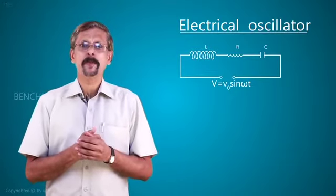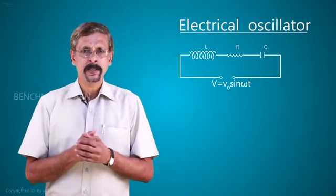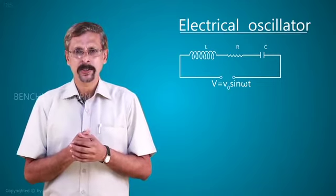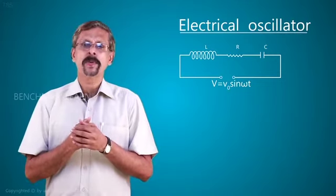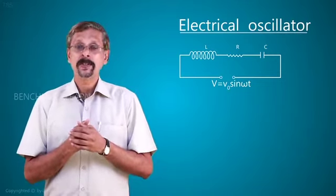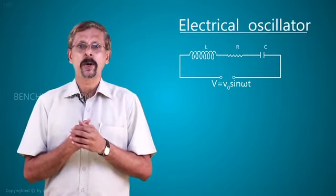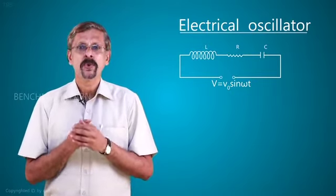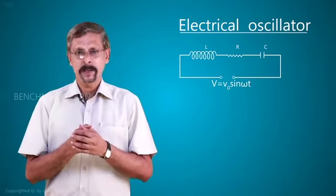That means there will be a potential drop across the inductance, a potential drop across the resistance, and a potential drop across the capacitor. These three potential drops will get added up, which is equal to V0 sin omega t.